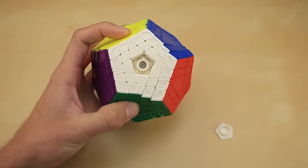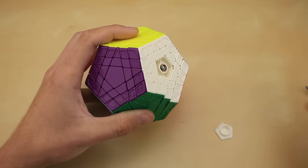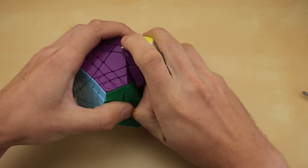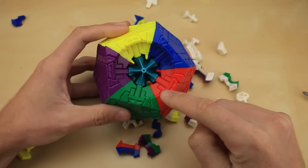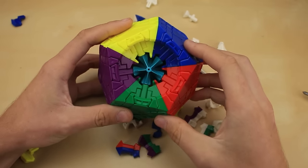I think the way I'm going to do it is just by unscrewing one of these centerpieces. Alright, are you ready for this? The screw is out, and it's not coming apart. There we go. There is the inside of a Gigaminx. That looks amazing.